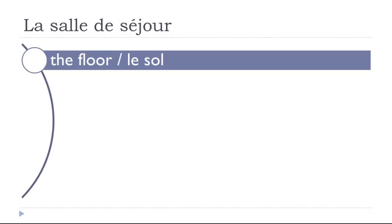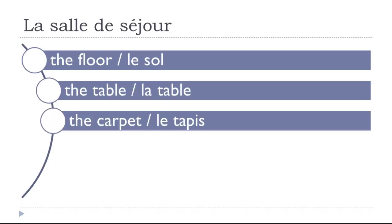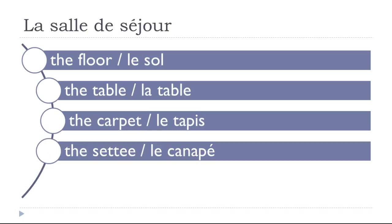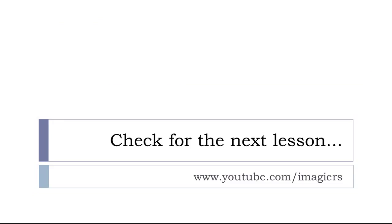Le sol (floor). La table (table). Le tapis (carpet/rug). Le canapé (sofa). La bibliothèque (bookcase). That's it for la salle de séjour.